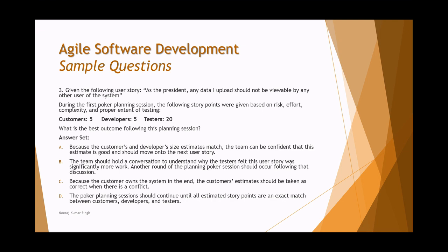Question three is another scenario-based question. Given the user story: 'As a precedent, any data I upload should not be viewable by any other user of the system.' During the first planning poker session, story points were assigned based on risk, effort, complexity, and extent of testing. Customers gave it 5, developers gave it 5, and testers gave it 20. What is the best outcome following this planning session?